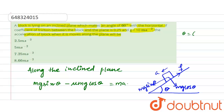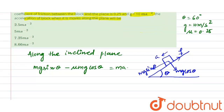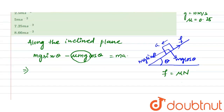Given: theta is equal to 60 degrees, g is equal to 10 meter per second square, mu (coefficient of friction) is 0.25. So mg sin theta minus frictional force is equal to ma. Frictional force f is equal to mu into N — coefficient of friction into normal force. Here the normal force is acting in an upward direction, and N is equal to mg cos theta. So frictional force equals mu mg cos theta.